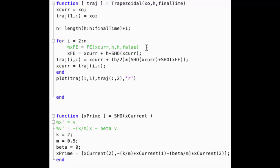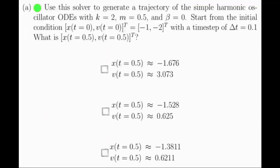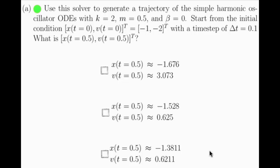Below the trapezoidal code, for completeness, I provide the simple harmonic oscillator code as well. Note that k equals 2, m equals 0.5, and beta equals 0 are the parameters that we will use throughout this homework. Part A asks us to find what x and v will be at times 0.5, starting from negative 1, negative 2, using a time step of h equals 0.1, and the given parameters. If we do this experiment, using the code I just showed, you get x equals negative 1.3811, and v equals 0.6211 at times 0.5.